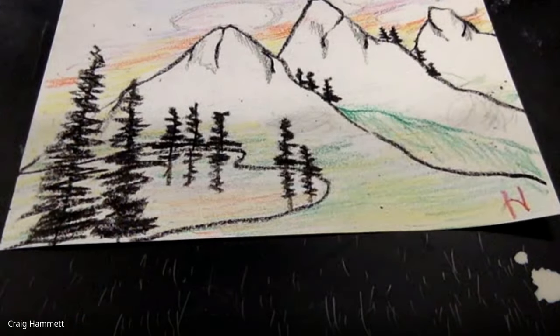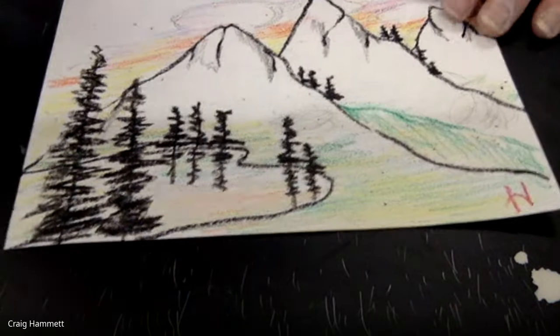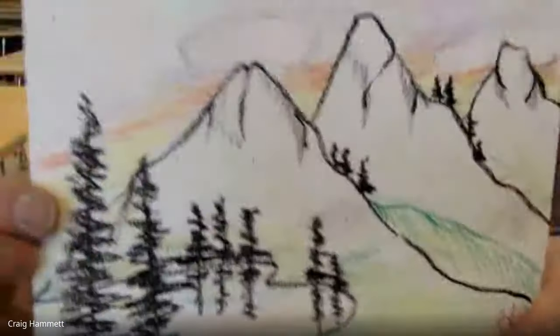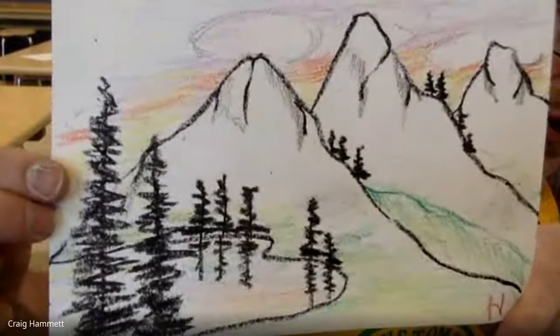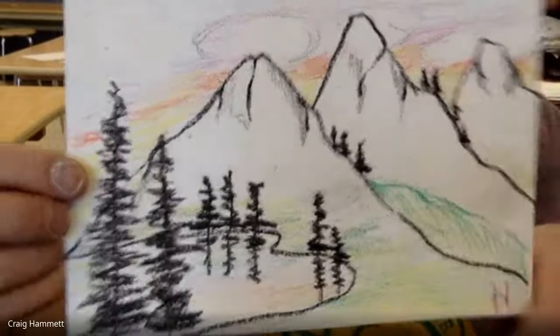I'm signing it. All right. There we have a Bob Ross style landscape using crayons. All right. Thank you.